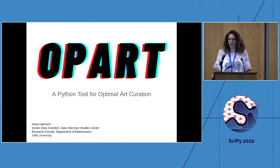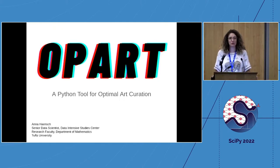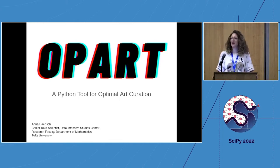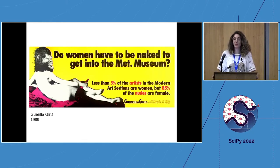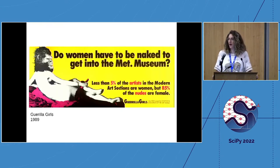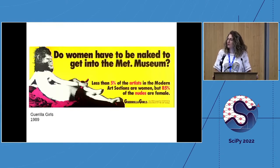Hi everyone. My name is Anna Hench. First SciPy, first lightning talk. I am going to talk about a project I am working on called OpArt — a Python tool for optimal art curation. This is a quick overview of the genesis of this idea and where it is headed. It is no surprise that the art market skews historically white and male. This is a piece of public art commissioned by the Guerrilla Girls in the 1980s, and it is still true today that women nearly do have to be naked to get into the Met Museum.